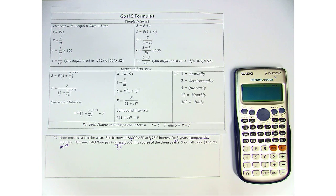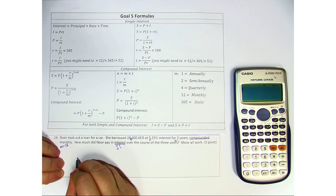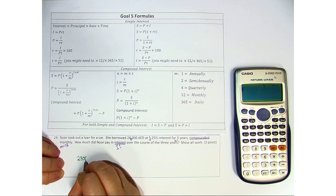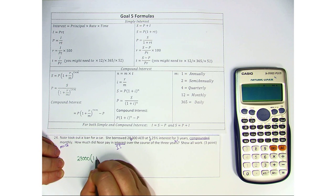How much did Noor pay in interest over the course of the three years? So we're going to look at this formula. P, 28,000, open bracket, one plus,